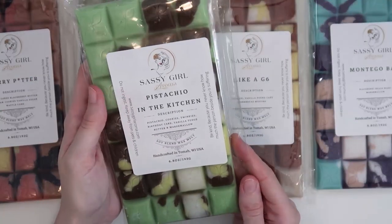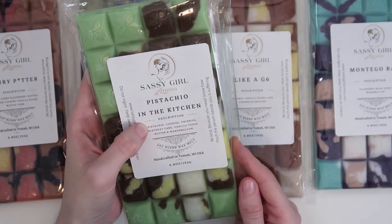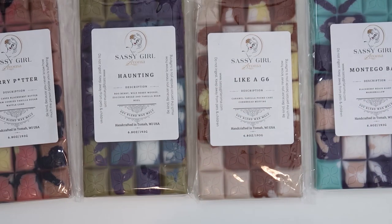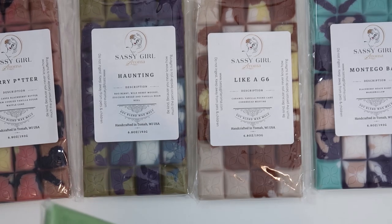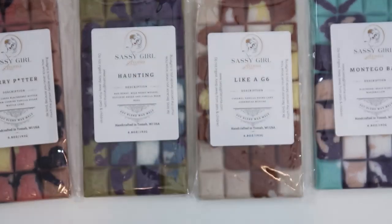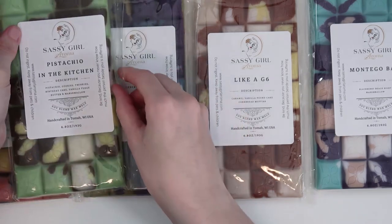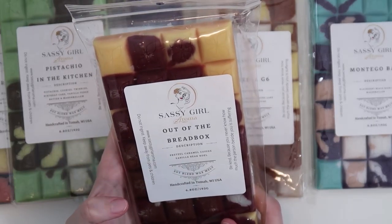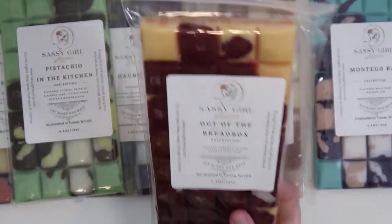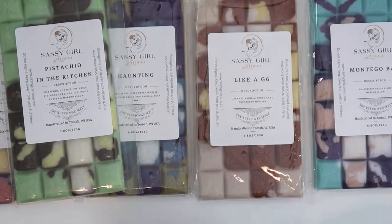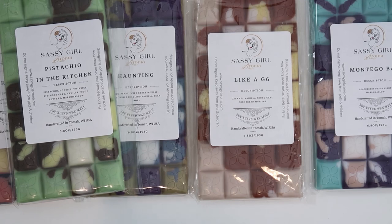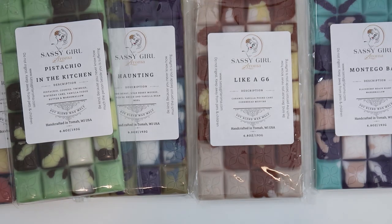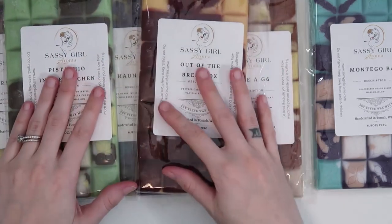Next we have Pistachio in the Kitchen. This is Pistachio. And then in the kitchen is Cookies, Twinkies, Birthday Cake, Vanilla, Fudge, Butter, and Marshmallow. This is very Pistachio forward. Pistachio is such an intense scent oil. It smells just like Pistachio. I don't smell anything else. But I mean, I liked it. This one I've melted before and was obsessed. This is out of the bread box. This is Pretzel Caramel Coffee and Vanilla Bean Noel. Yes, this is so good. I just remember every time I melted this being obsessed with it. It's just so delicious and wonderful.